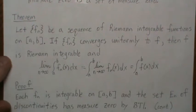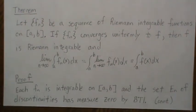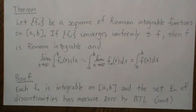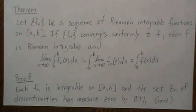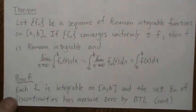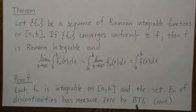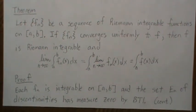So the proof is this: Each f_n is integrable on [a,b], and that says the set E_n of discontinuities has measure zero by background theorem 1.